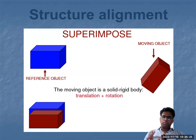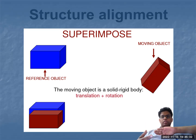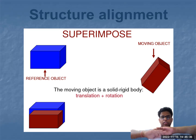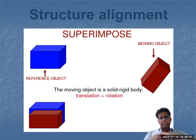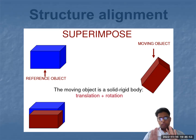Suppose this is one structure and if you would like to superimpose this structure, you have to transition or rotate it, or both, and ultimately superimpose it such that you get the minimum root mean square deviation. The distance and deviation should be minimum. That's the concept of structure alignment.